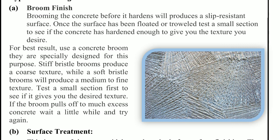One type of finishing is brooming or brushing, which gives a better gripping and better bonding surface. Concrete brooms are specially designed for this purpose. Stiff bristle brooms produce a coarse texture while soft bristle brooms produce a medium to fine texture. Test a small section first to see if it gives the desired texture.